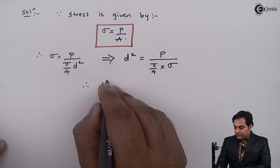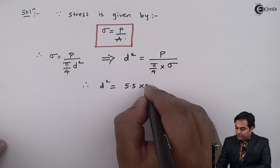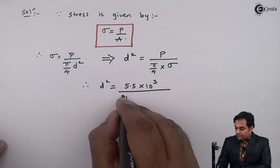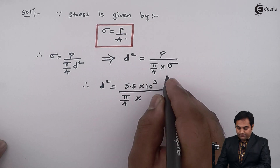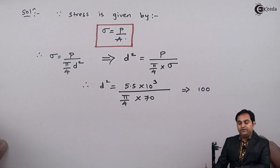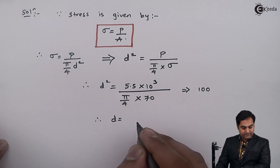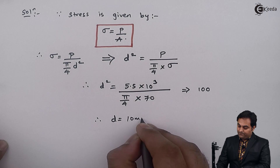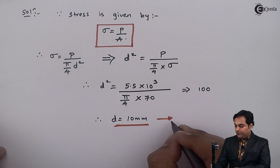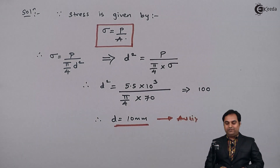Substituting values: P is 5.5 into 10 raise to 3 and Sigma is 70. Solving, D square equals 100, and taking the square root gives D equal to 10 mm. This is the first answer — the minimum diameter of the copper wire is 10 mm.